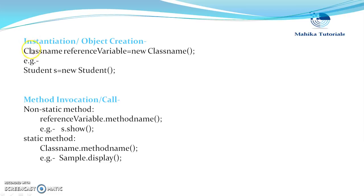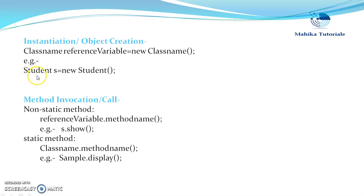Now this is the instantiation syntax in Java. We need to give the class name and the reference variable, the equals operator, followed by the new operator, and then again we give the class name for which we want to create an instance. For example, to create an instance of the Student class, we give the class name 'Student', then a reference variable following the rules of identifiers, then the equals operator, the new operator, and then the class name followed by parentheses.